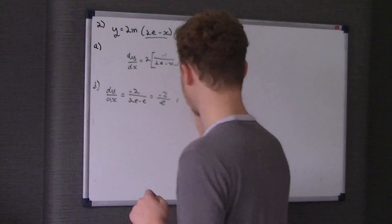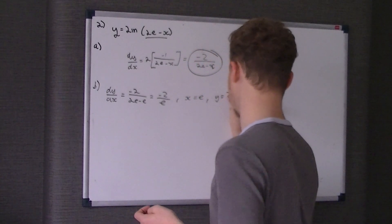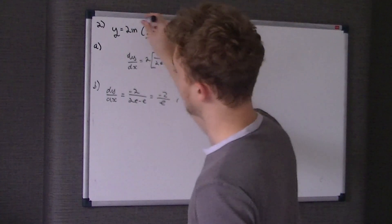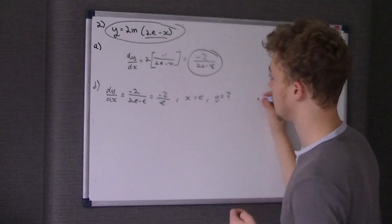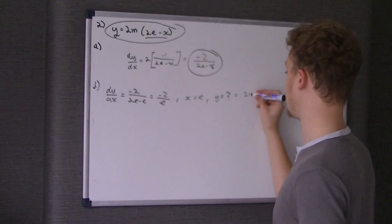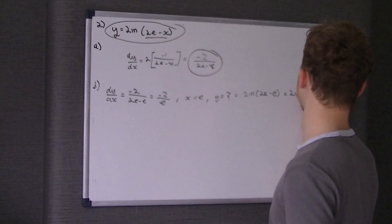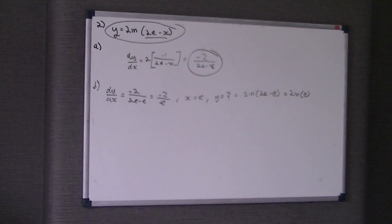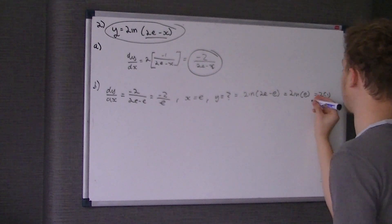Now, we know that this is where x equals e. To find the equation of the normal, we're going to have to also find the y coordinate where x equals e. So therefore, we just revert to this earlier equation and sub x to be e in there. So 2 ln of 2e take e, therefore that's the same as 2 ln of e.